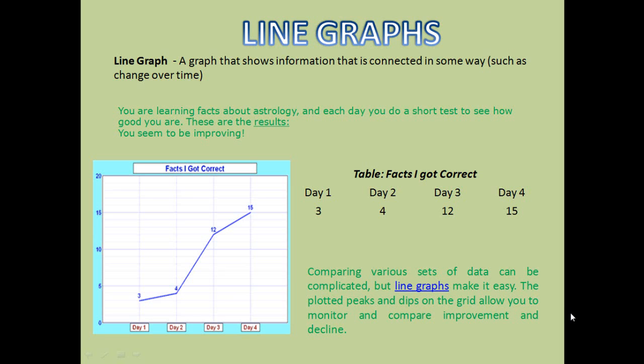The line graph shows that if it is moving upwards, there is an improvement. If there is a downfall, it shows that you are lacking in some information.